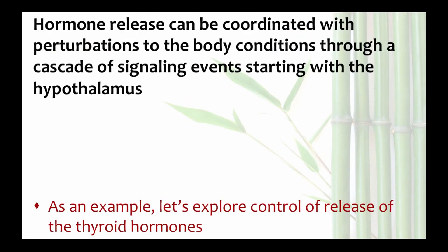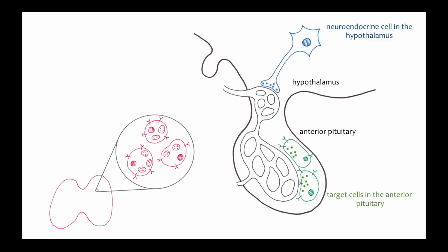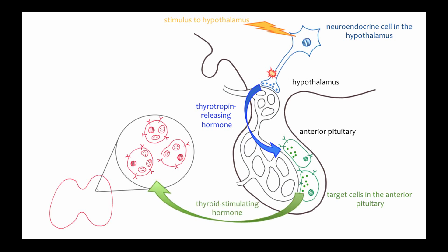Let's think about one particular cascade as an example of the communication between the hypothalamus, anterior pituitary, and endocrine gland. The example we are going to explore is the release of thyroid hormones, which control the body's metabolic rate. A stimulus to the hypothalamus triggers an action potential and the release of thyrotropin releasing hormone from the neuroendocrine cells of the hypothalamus. Target cells in the anterior pituitary bind the thyrotropin releasing factor and respond by releasing thyroid stimulating hormone. Thyroid stimulating hormone is then bound by target cells in the thyroid gland, stimulating them to release the thyroid hormones T3 and T4.